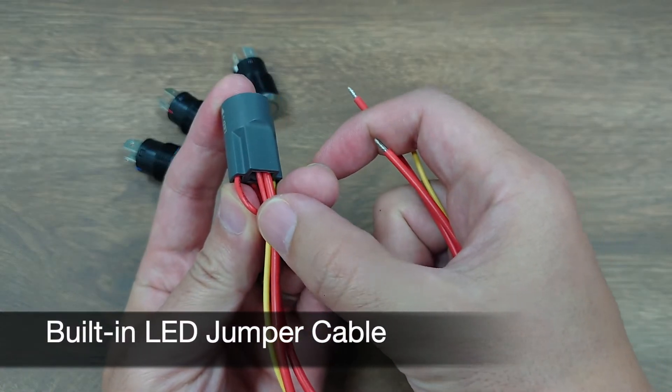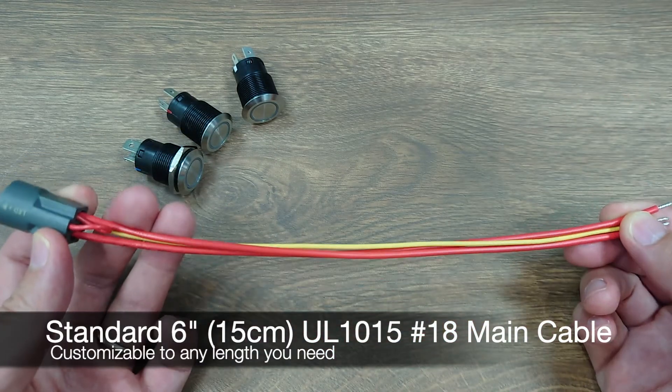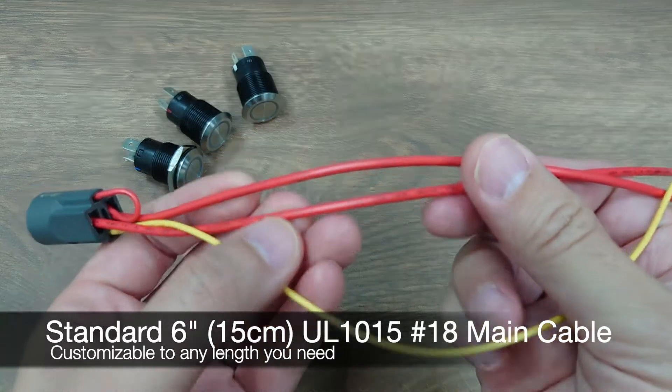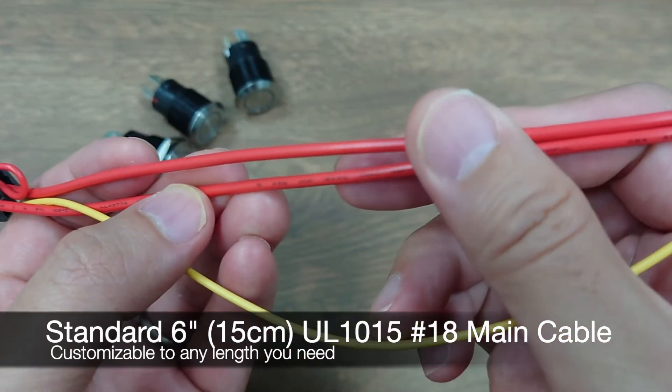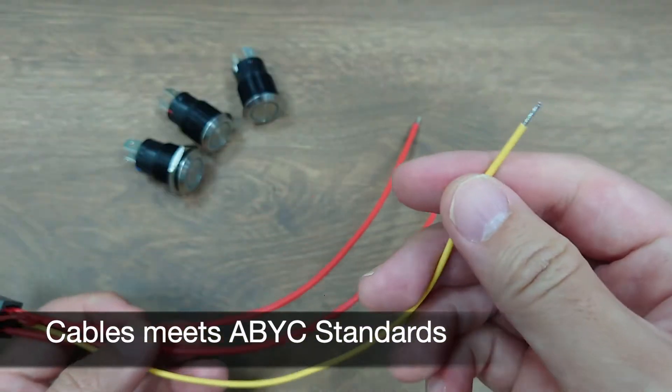The kit comes with six inch long, or 15 centimeter long, UL 1015 18 gauge cables for the main switch terminals, which is enough for carrying 20 amp current based on ABYC standards.